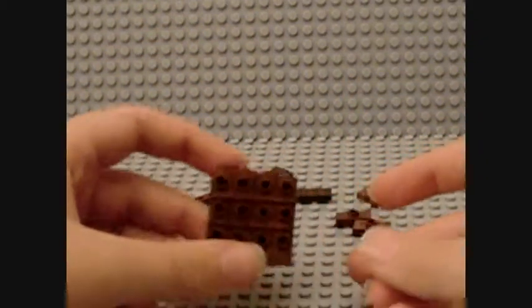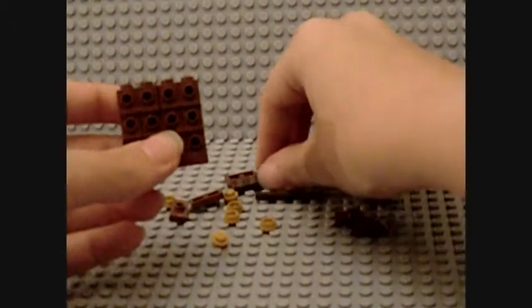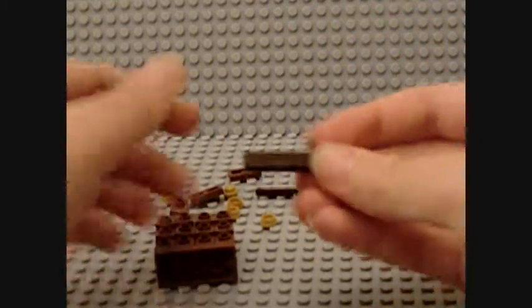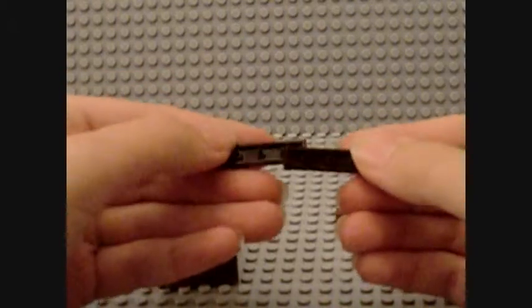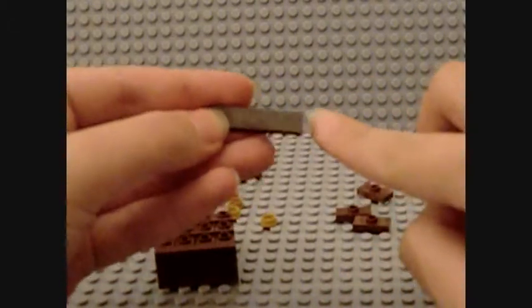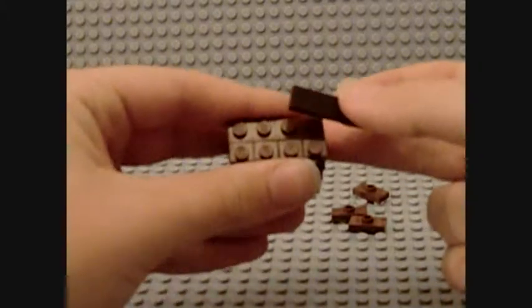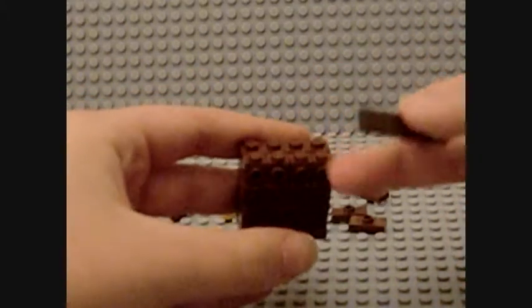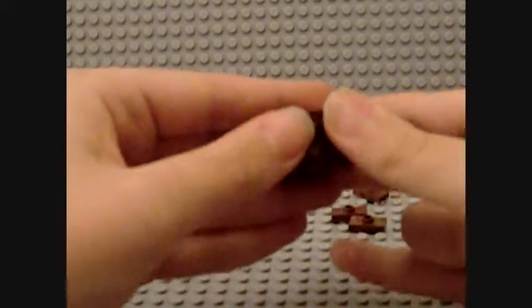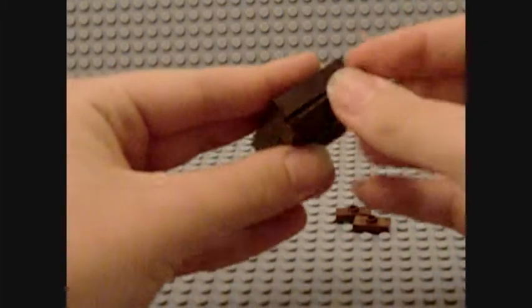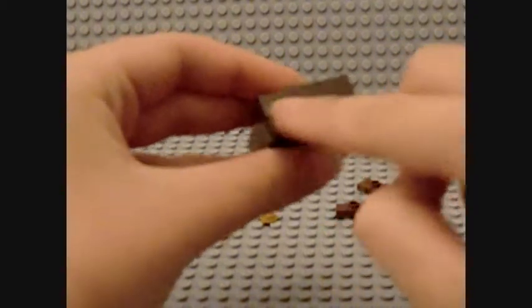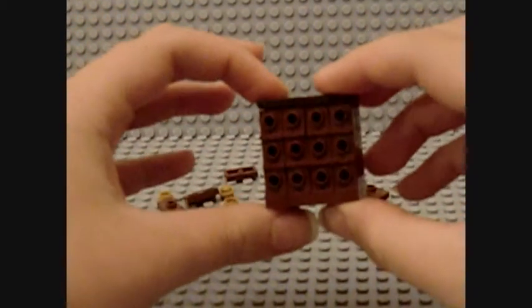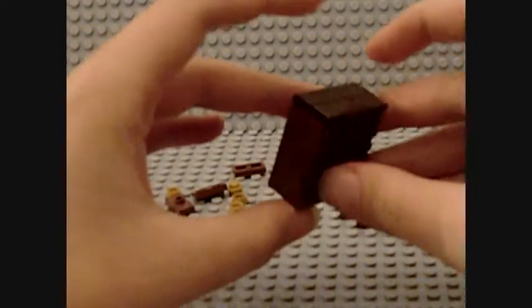Now the next thing we're going to need to do is get two of these 4x1 thin bricks. You see they've got these flat tops to them? If you put these on top of this little structure we just made, some people have 4x2s, but I haven't got one of them, so if you just put them on top, it should look something a bit like that at this stage.